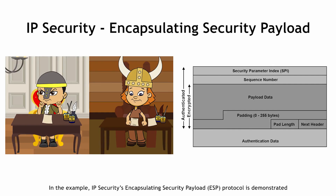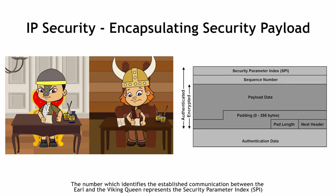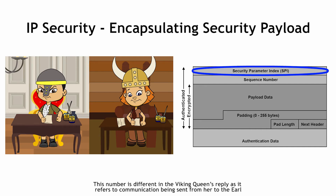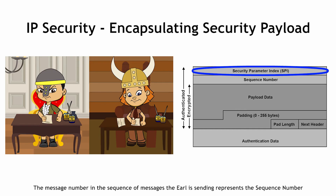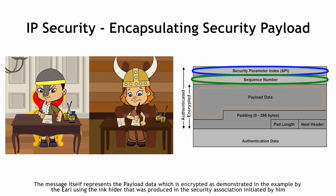In the example, IP Security Encapsulating Security Payload Protocol is demonstrated. The number which identifies the established communication from the Earl to the Viking Queen represents the Security Parameter Index. The number is different in the Viking Queen's reply as it refers to communication being sent from her to the Earl. The message number in the sequence of messages the Earl is sending represents the sequence number. The message itself represents the payload data, which is encrypted as demonstrated in the example by the Earl using the inkhider that was produced in the Security Association initiated by him.